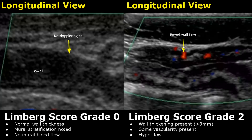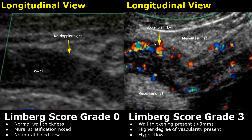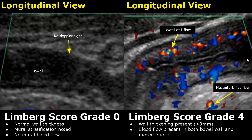Limburg score grade 2 is given when some blood flow is noted within the bowel wall — this is termed hypoflow. A grade 3 Limburg score will have a large amount of vascular flow found on color Doppler — this is termed hyperflow. In a Limburg score grade 4, blood flow within mesenteric fat will be found along with bowel wall hyperemia.